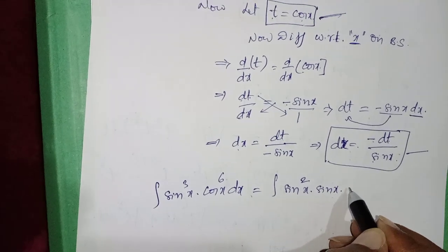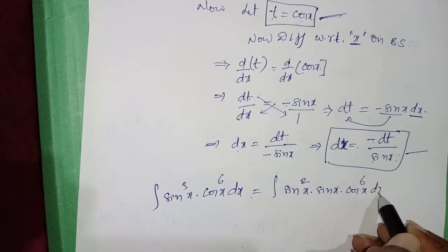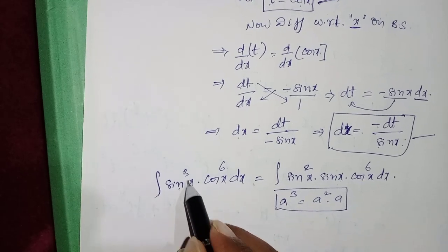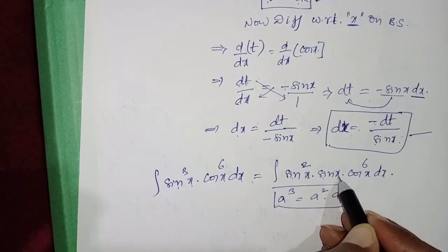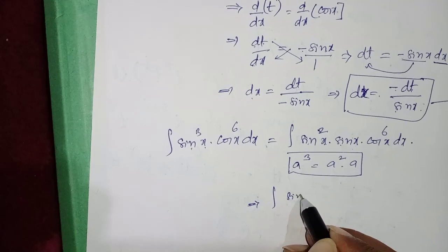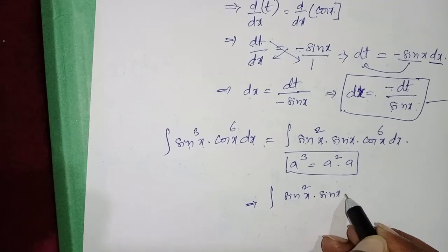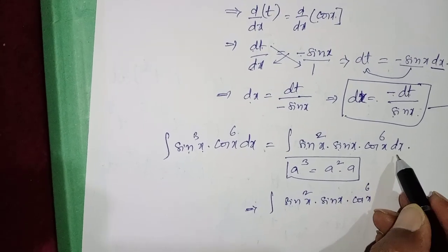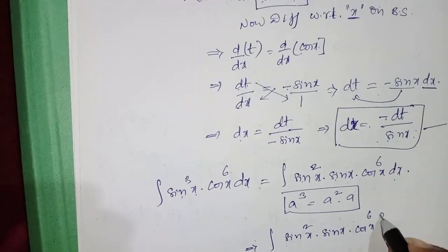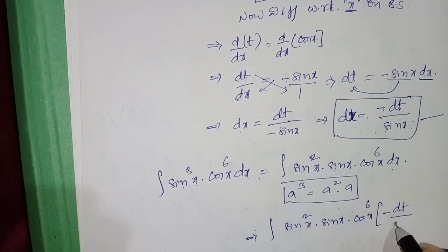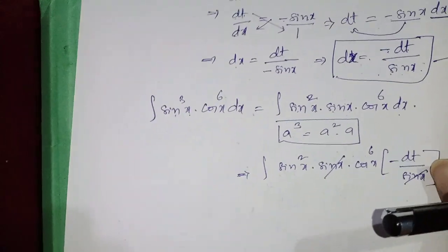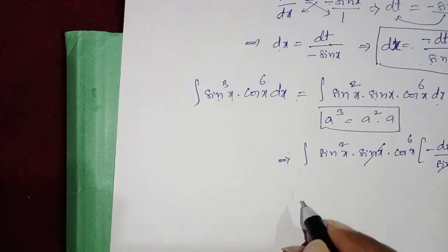We rewrite sin³x as sin²x · sin x, so the integral becomes ∫sin²x · sin x · cos⁶x dx. Substituting dx = −dt / sin x, the sin x in the numerator and denominator cancel, leaving ∫sin²x · cos⁶x · (−dt).